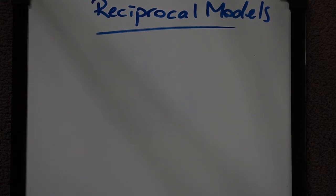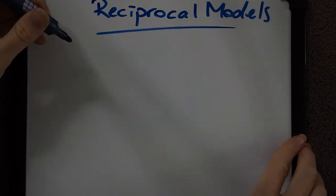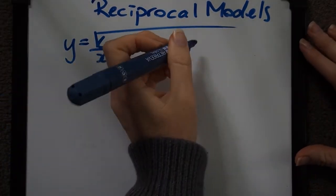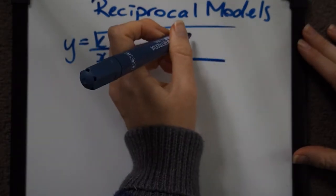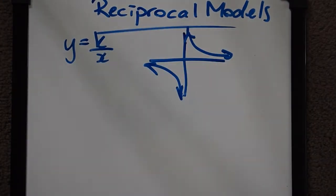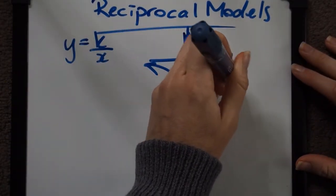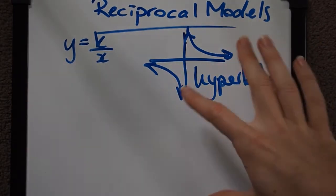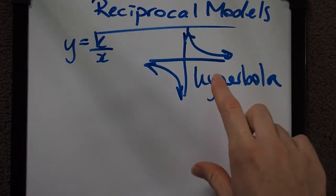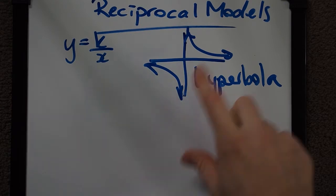Looking today at a reciprocal model, so a reciprocal model is simply a practical situation where the graph forms the shape of a hyperbola. We're still using our equation y equals k over x, which if you remember makes the graph of a hyperbola. It has the two symmetrical branches in the first and third quadrants and it has asymptotes at the y-axis and the x-axis.